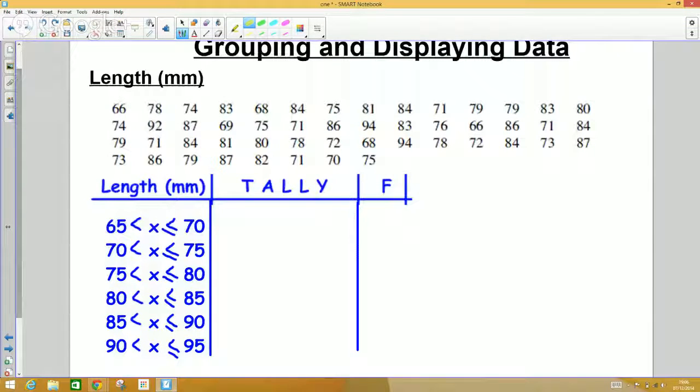Group sizes need to be either going up in fives or tens. Ideally for this data, we want between four and eight categories. Now I've got six categories, going up in fives. I like the look of it.